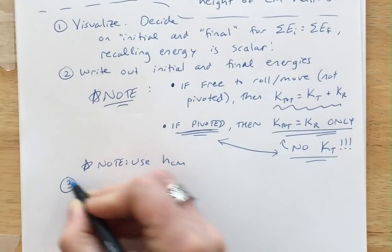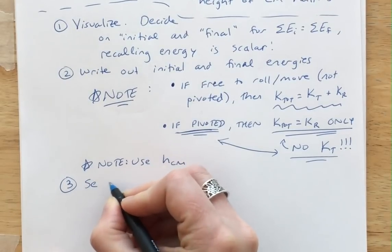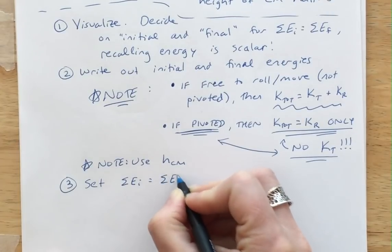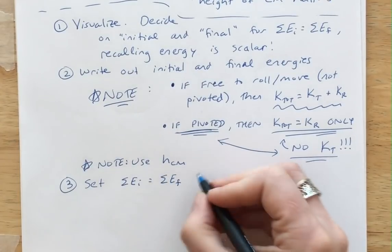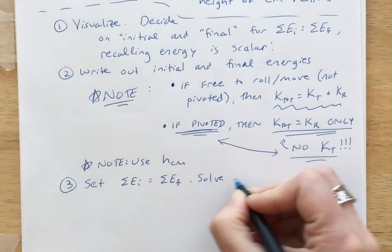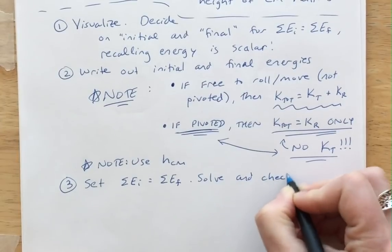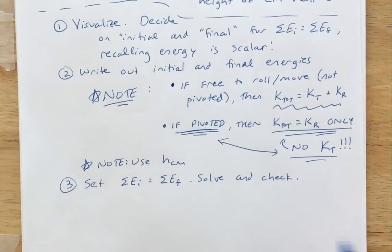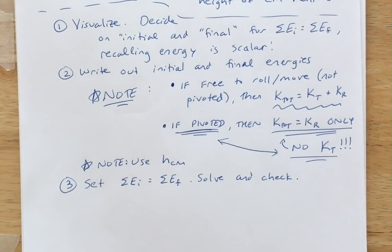Set the sum of all initial energies equal to the sum of all final energies, then solve and check your answer. That concludes the video on rolling motion and conservation of energy with rotation. Please let me know if you have any questions.